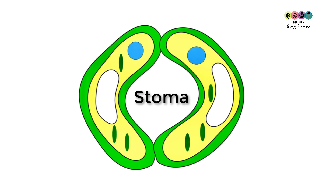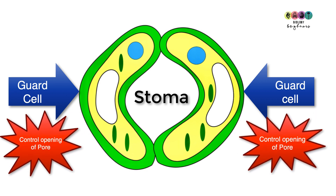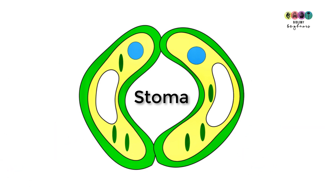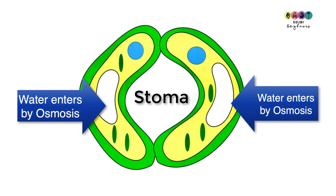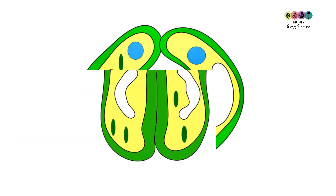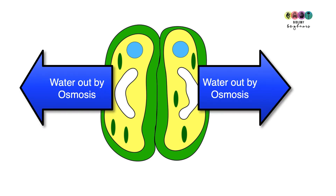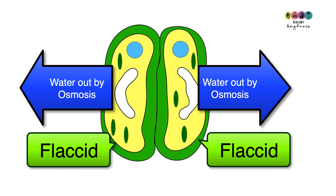Each stoma is surrounded by a pair of guard cells, which are responsible for opening or closing the hole depending on whether those guard cells are turgid or flaccid. Stomata open when the guard cells take in water by osmosis — they swell, become turgid, and buckle outwards, opening the stoma. When the guard cells lose water by osmosis they become flaccid, and this closes the stoma.